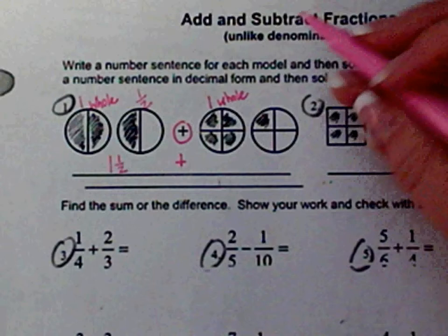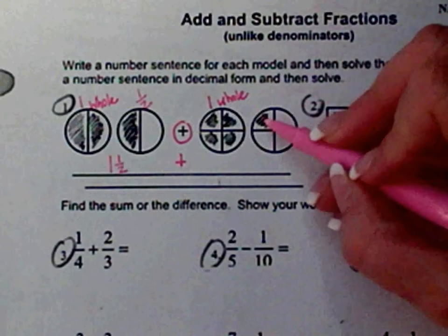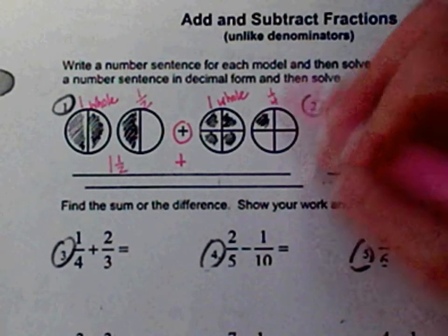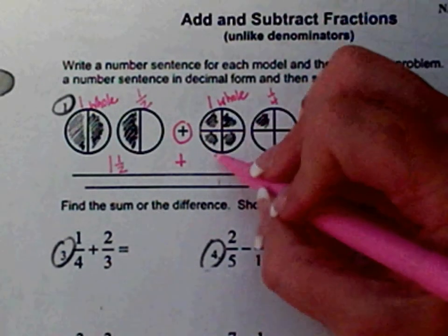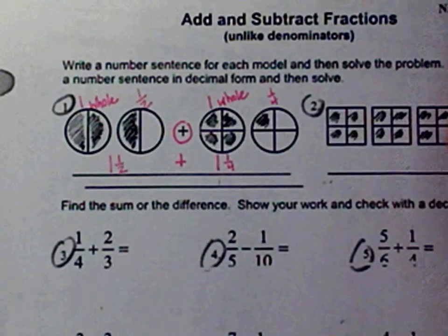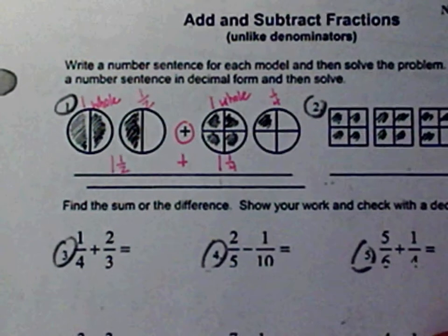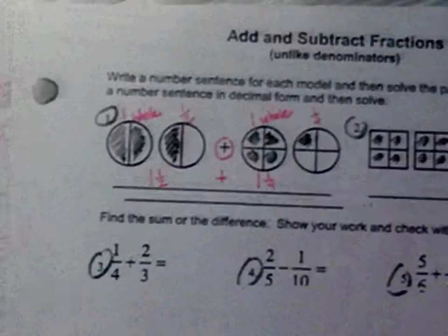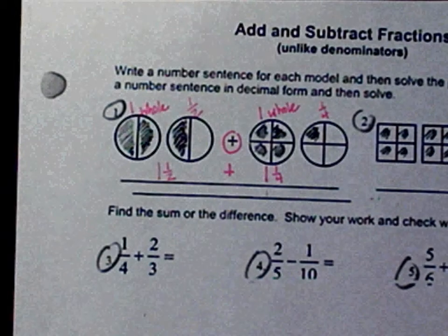The plus sign tells us we're going to add these two together. The second picture again shows one whole shaded, representing a whole. The next picture has one shaded out of four total, so together that would be one and one-fourth.